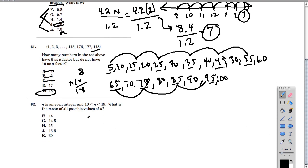In the next one, we know that n, some number n, is an even integer, and it's bigger than 10 and less than 19. So it's between 10 and 19. What is the mean of all possible values of n? So what are our integers? We have 11, 12, 13, 14, 15, 16, 17, and 18. These would all work.